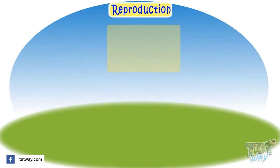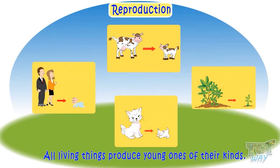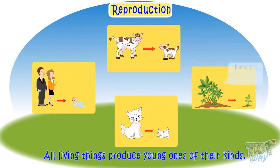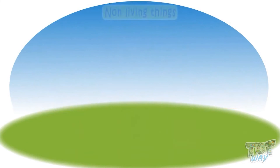Reproduction — all living things produce young ones of their own kind. These are the features of living things. Now let's learn about non-living things.